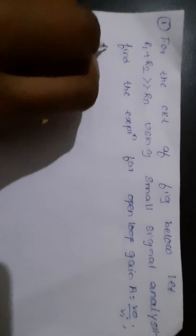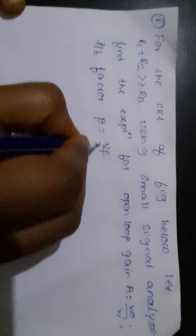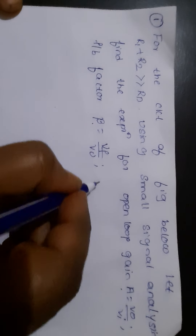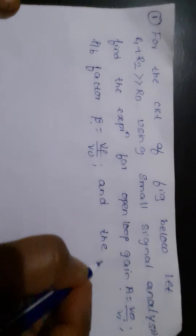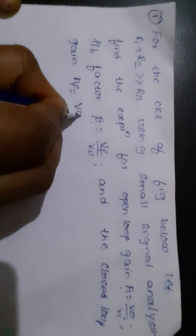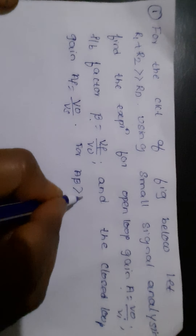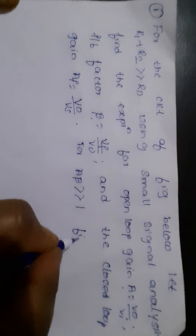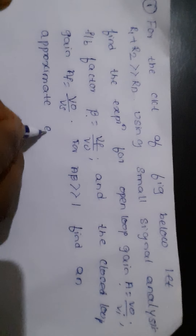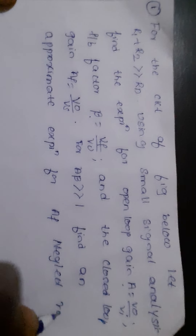Find the expression for feedback factor beta, which equals Vf upon V_naught. We are supposed to find A, find beta, and also find the closed loop gain AF equals V_naught upon Vs. For A·beta much greater than 1, find an approximate expression for AF. Neglect rd. This is the circuit diagram they have given.